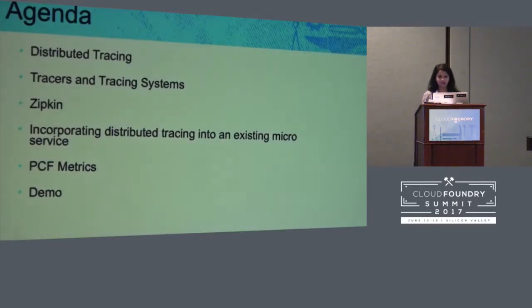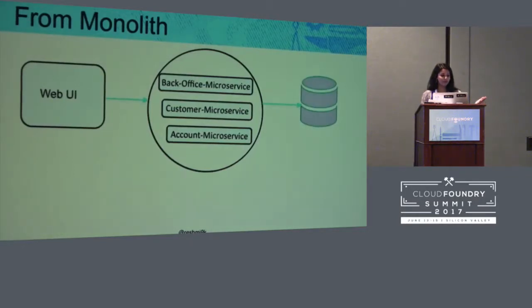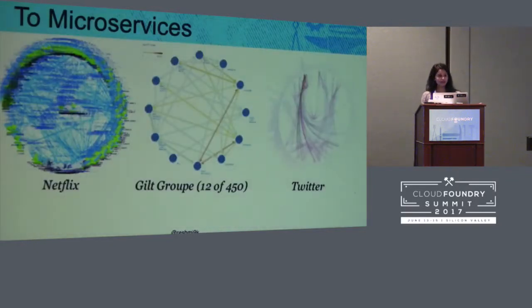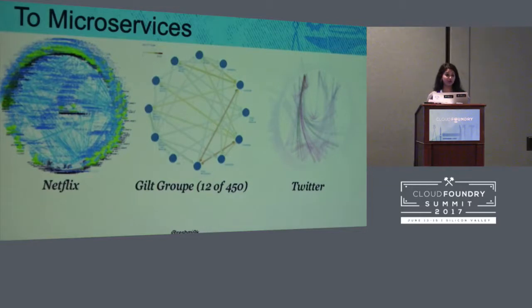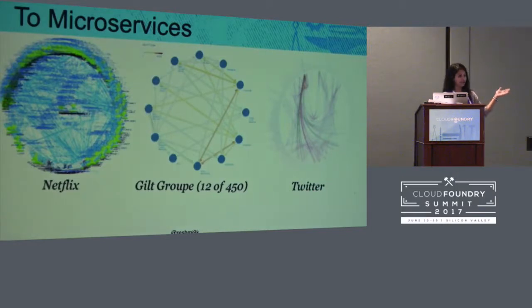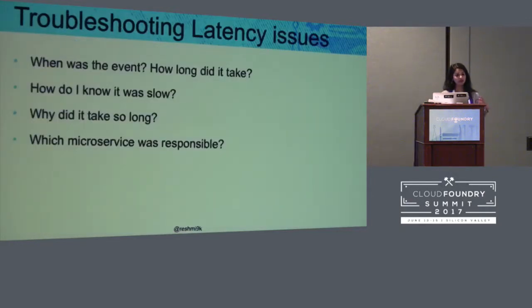When we move from monoliths — a big ball of mud — to microservices, there are a lot of challenges like configuration management and service discovery. Netflix's architecture three years ago shows how complicated it can get. There are many roadblocks on this journey we need to figure out.